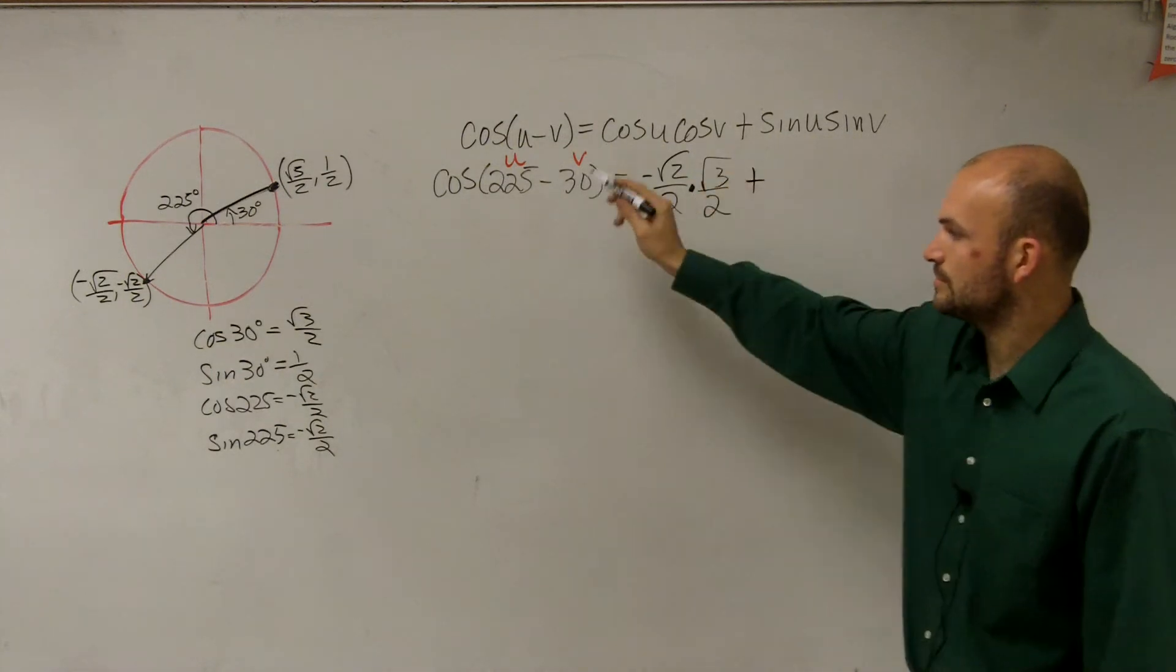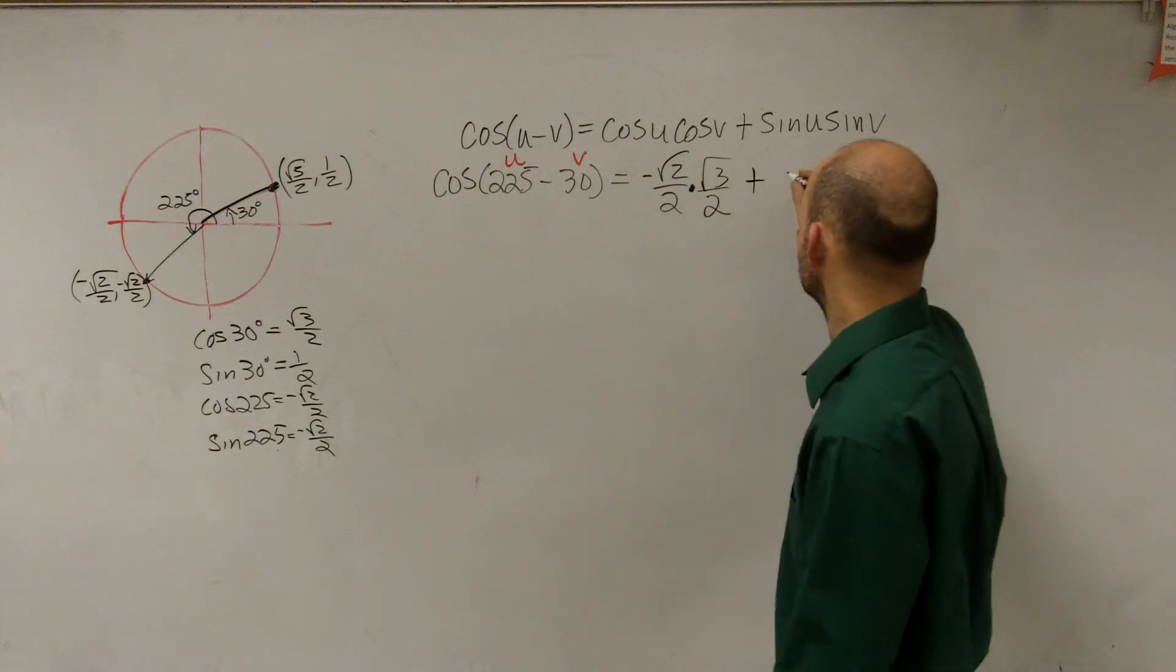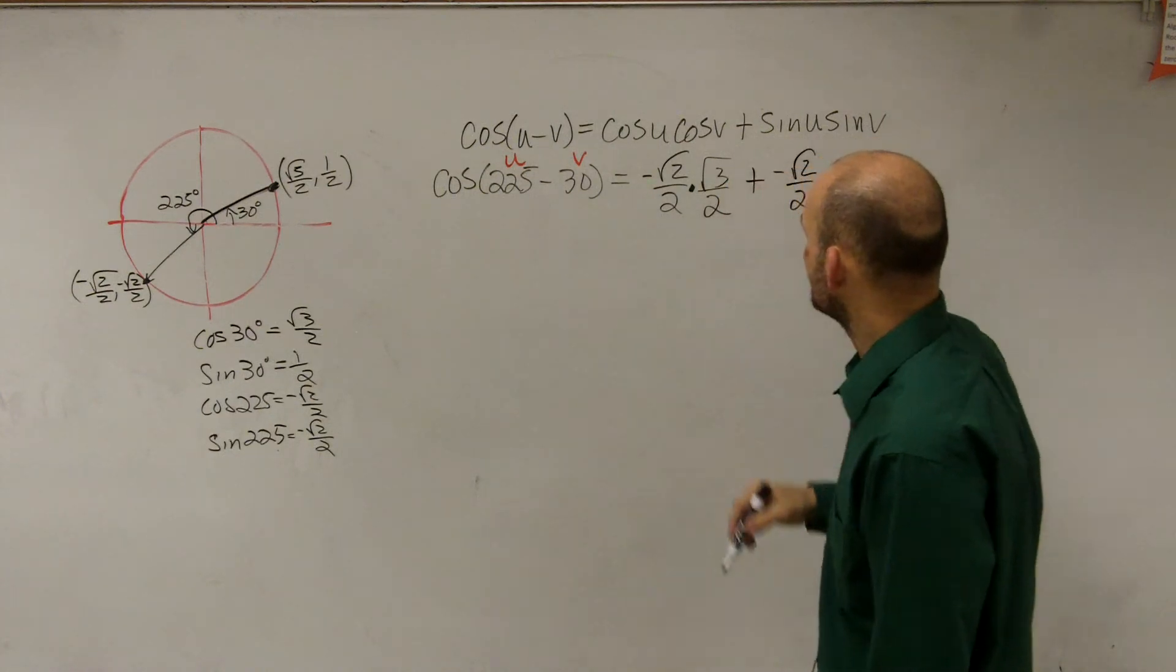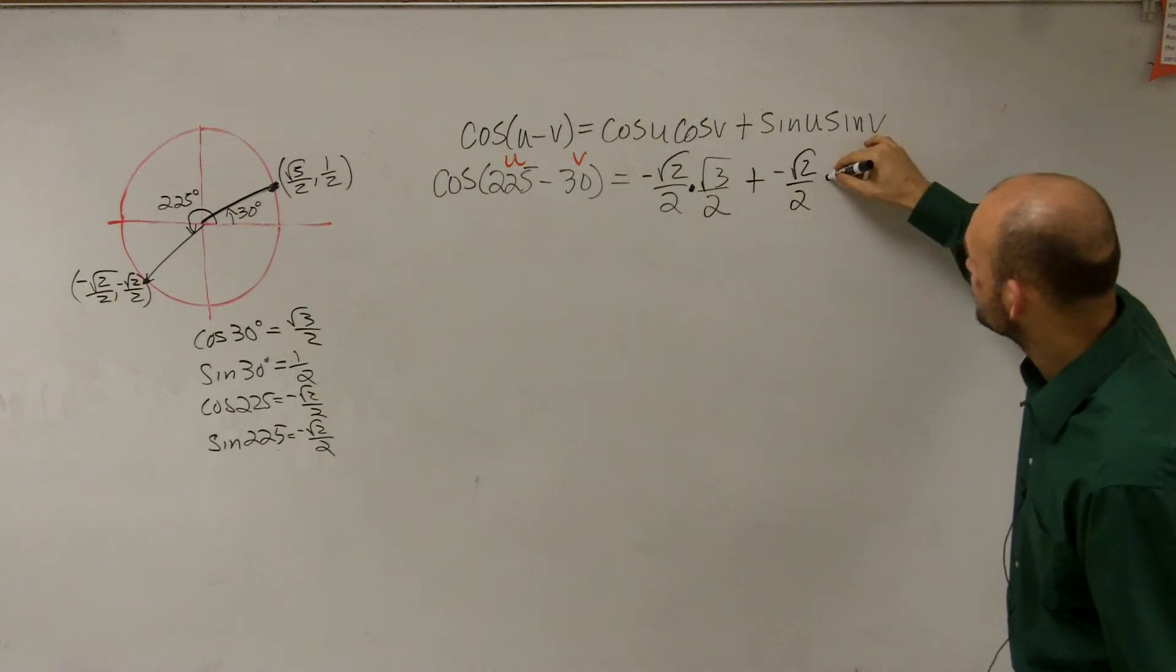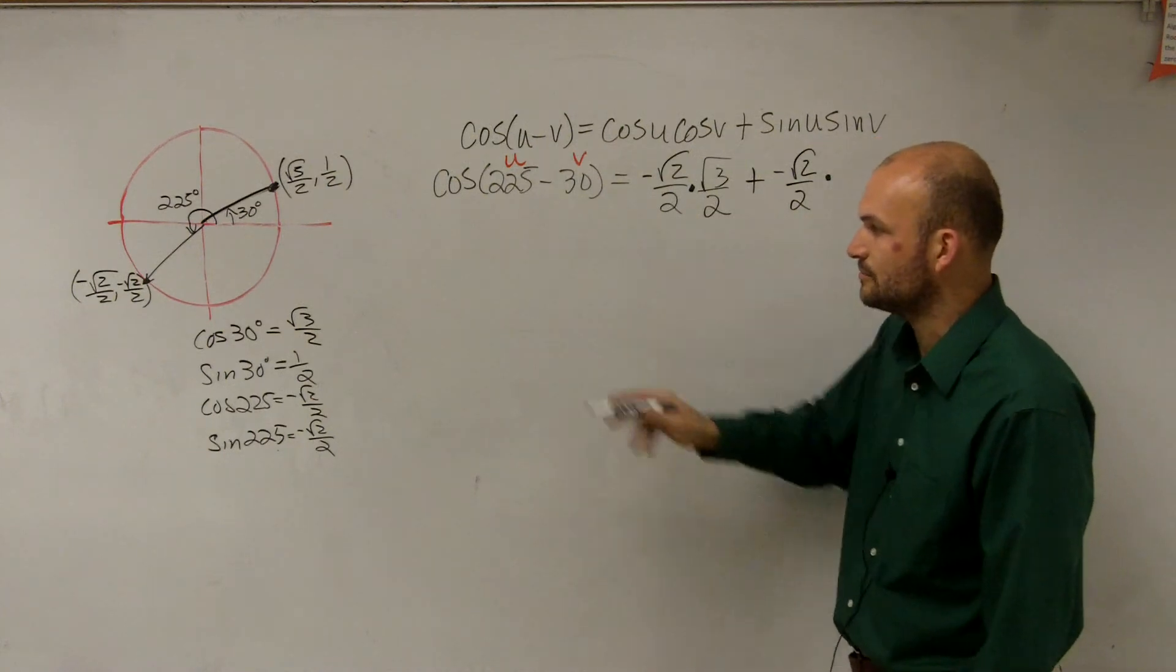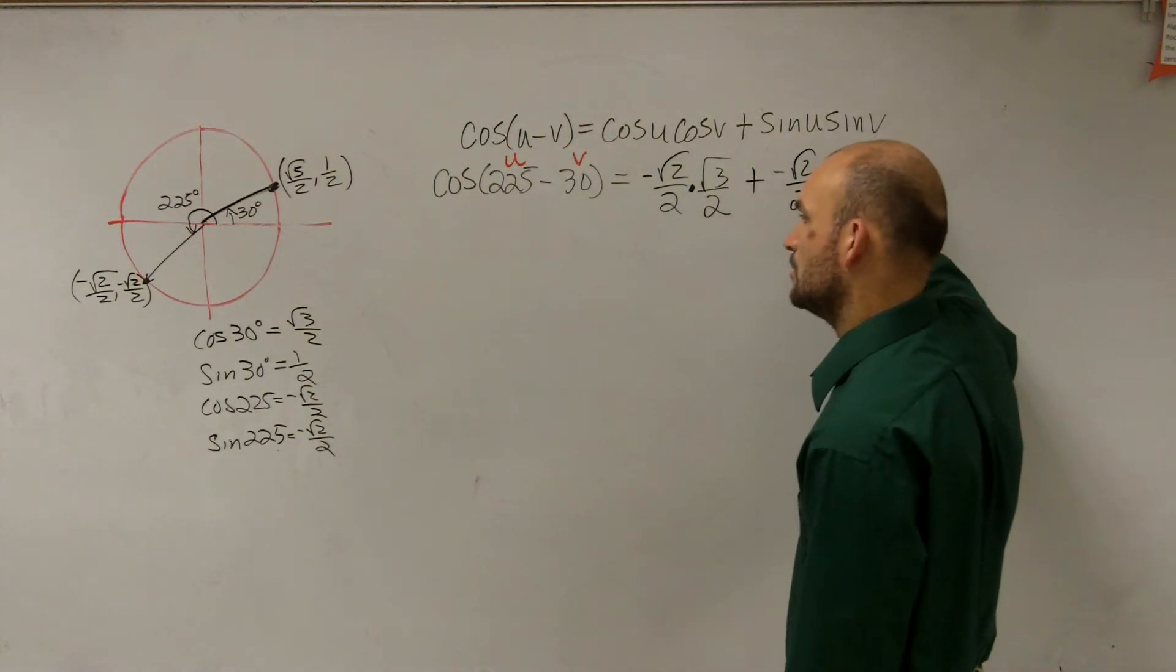Plus the sine of u, which is 225 degrees, which is a negative square root of 2 over 2. And then times that by the sine of v, which is 30 degrees, which is 1 half.